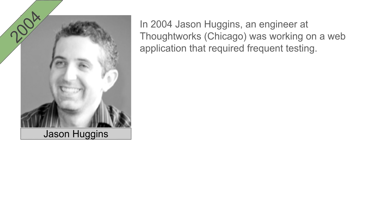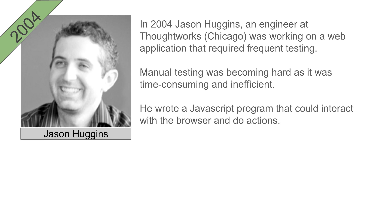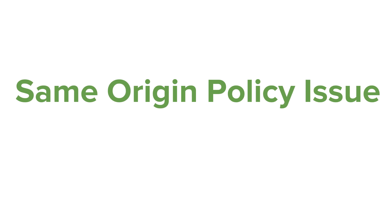The story starts in 2004 when Jason Huggins, an engineer at ThoughtWorks, was working on a web application that required very frequent testing and was hard to manage. So he wrote a JavaScript program that could interact with browsers and perform actions. He called it JavaScript Test Runner. He started giving demos about this tool to the internal team and soon there were discussions to make this tool open source.